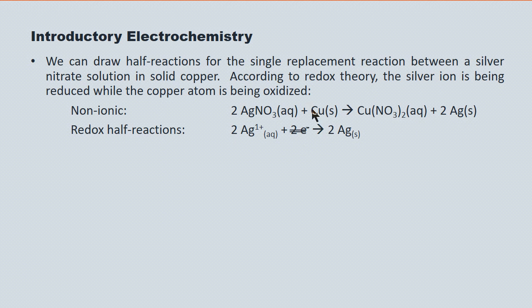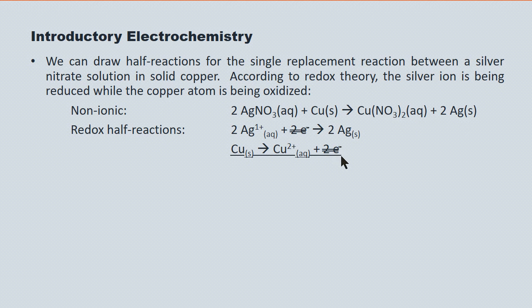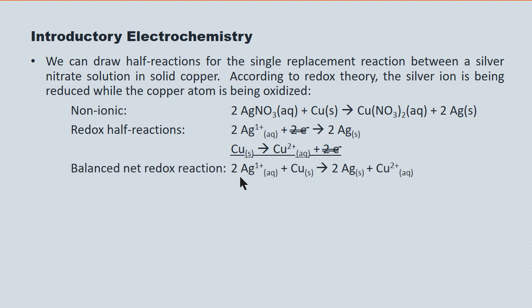We pull down the copper on the left as a neutral atom; on the right it's a copper(II) ion. To go from copper to copper(II), two electrons are removed from the atom. That's the oxidation half reaction. The electrons going into the reduction and coming out of the oxidation cancel, leaving us with a balanced redox reaction: two silver ions react with one copper atom to produce two silver atoms and one copper(II) ion.